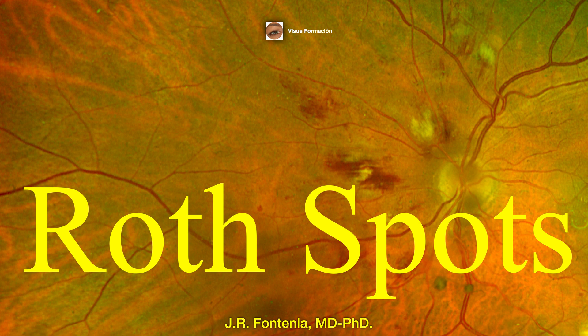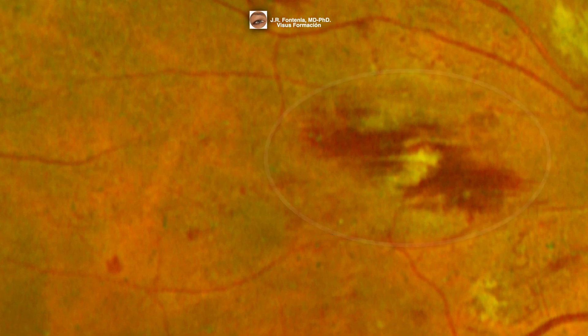White-centered retinal hemorrhages, also known as Roth spots, are retinal hemorrhages that can be seen in a variety of medical conditions. Roth spots are most commonly associated with infective endocarditis and have been detected in 80% of cases of subacute bacterial endocarditis. This is a characteristic Roth spot.